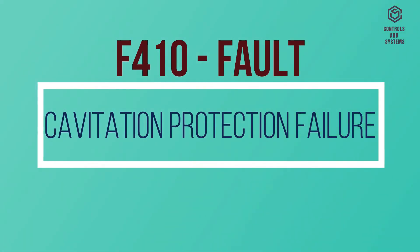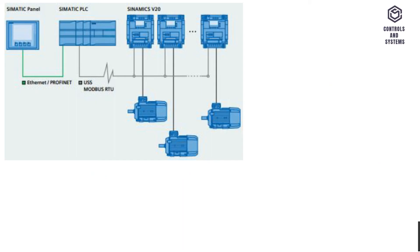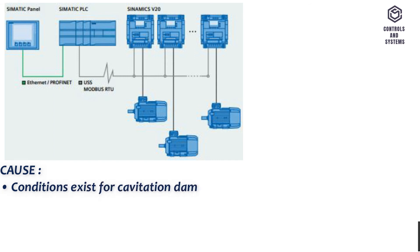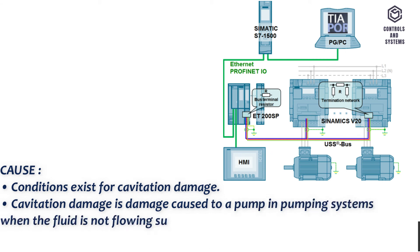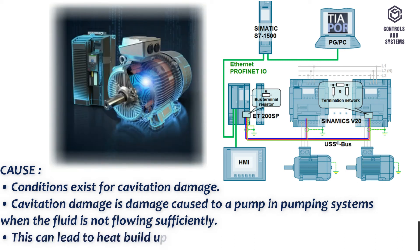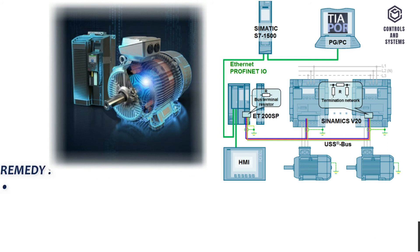F410 Fault: cavitation protection failure. Cause: conditions exist for cavitation damage. Cavitation damage is damage caused to a pump and pumping system when the fluid is not flowing sufficiently. This can lead to heat build-up and subsequent damage to the pump.